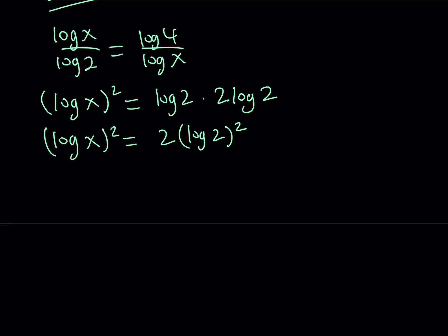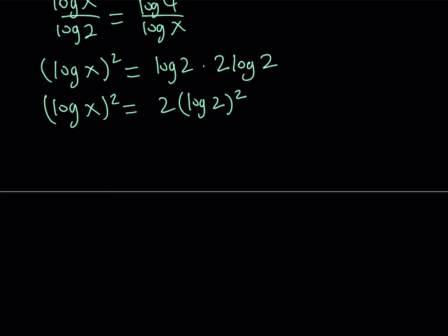Now, I want to be able to solve this equation by square rooting both sides, and if I do, I get two solutions. One of them is going to look like this. Log x is going to be square root of 2 times log 2. And the other solution is going to be log x equals negative root 2 times log 2.